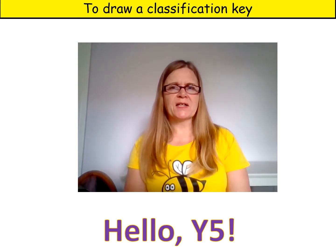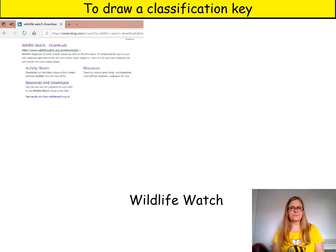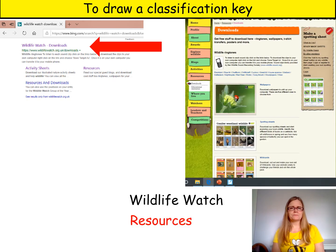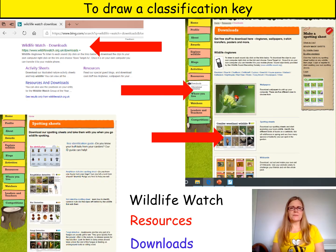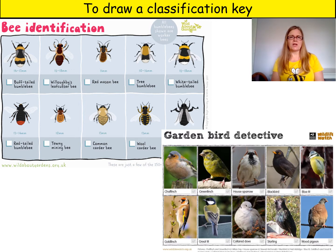First you will need to think of some animals to classify. I use photos from a spotting guide which I found by searching for Wildlife Watch and clicking on it, then clicking on resources and downloads and spotting guides. Choose the spotting guide that you're interested in — I chose bees, but you can choose any animals you like, such as garden birds or whatever else you like.